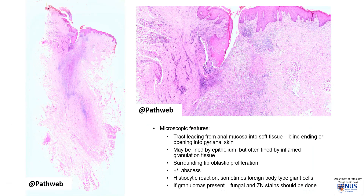Microscopically, as mentioned, there is a tract that leads from the anal mucosa into the underlying soft tissue. This can be either blind ending or it can open into the perianal skin. The tract is often lined by inflamed granulation tissue, and there is a variable amount of inflammation, which can be acute or chronic, or mixed acute and chronic. There can also be some fibroblastic proliferation as well as fibrous scarring around this, and sometimes also abscess formation and histiocytic reaction.